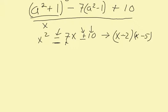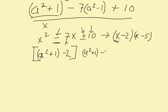Now, now we substitute back in a squared plus 1 back in for our x. So it's a squared plus 1 minus 2, times a squared plus 1 minus 5.